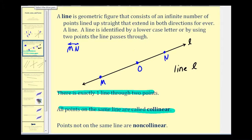However, if we introduce another point that's not on the line, let's say this point here, point P, now all four of these points are not on the same line. And a set of points not on the same line are called non-collinear.